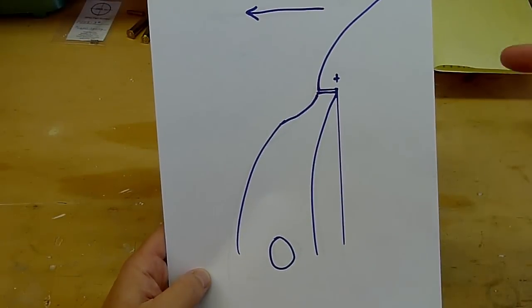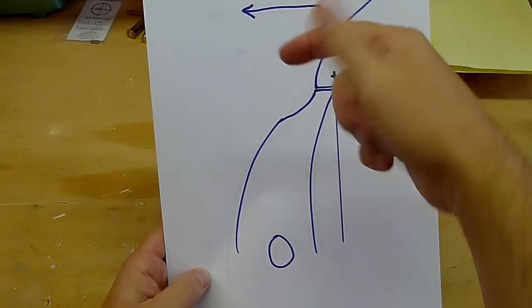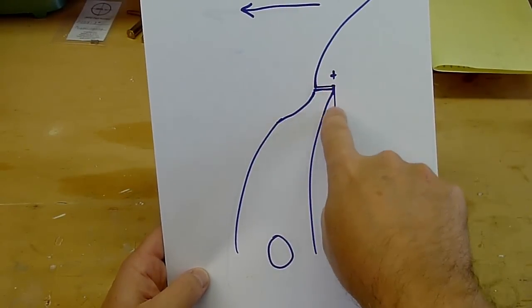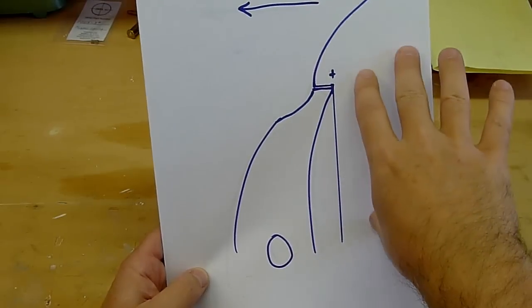Alright, these are my drawings. The gun is pointed this way. Here's the sear, the sear nose, the hammer hooks, and here's the hammer.